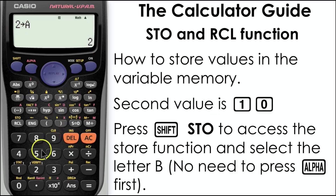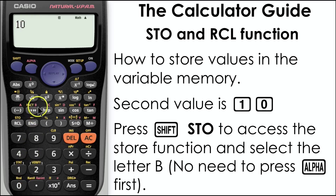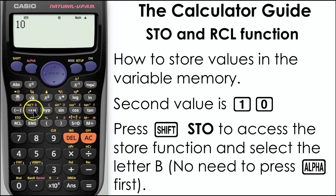The second value we're going to store is 10 and we're going to store this in memory B. Input 10 and press shift and store, then press B. Again there's no need to press the alpha key first.